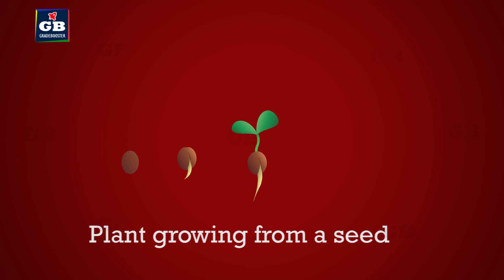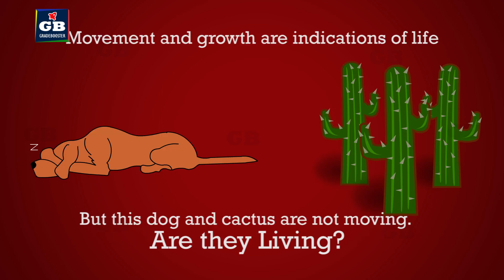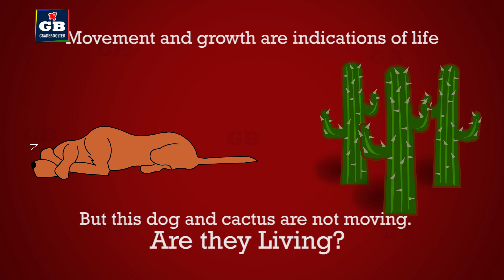If you sow a seed in soil, after a few weeks you find a plant growing. Based on the characteristic of growth, we say the plant is a living thing. So movement and growth are indicators of life.